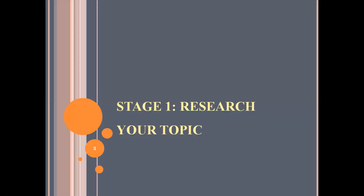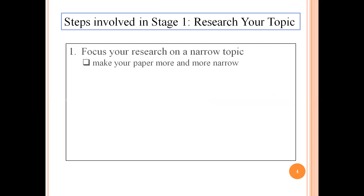Stage 1 is researching your topic. In this stage, there are a few steps to be followed. The first one is to focus your research on a narrow topic. When you start to conduct your research, try to make your research area very narrow. Because if the research area is broad, you cannot defend your argument or your research problem. If the research problem is more refined, then you can easily pass the argument and defend the research problem with clear research results or evidence.